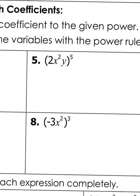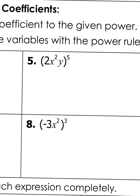For number five, I'm going to have you try this one on your own. You have to multiply or distribute this five in. Keeping in mind, since they don't have an exponent on that y, it's like a one. So you're going to have to do two to the fifth power, x squared to the fifth power, and y to the fifth power. Go ahead and try number five now.